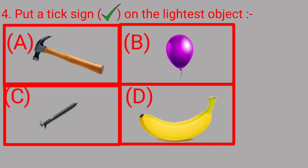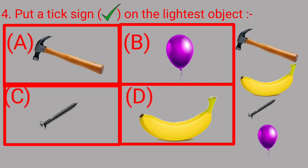You might have picked these things in your hand. The hammer is quite heavy. A banana is lighter than a hammer, and a nail is lighter than both the hammer and banana. When you pick the balloon, even though its size is quite big when inflated, its weight is very less. So the balloon is the lightest among all these objects, and option B is the correct answer — we will tick option B.